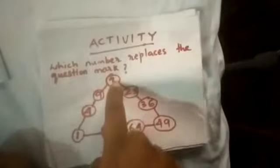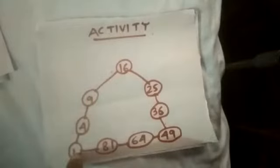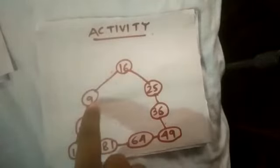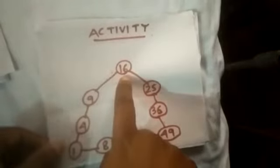Next activity is which number replaces the question mark? Here is the question mark and the answer is 16. 1 squared is 1, 2 squared is 4, 3 squared is 9, that's why 4 squared will be 16.